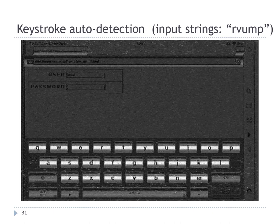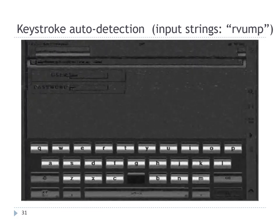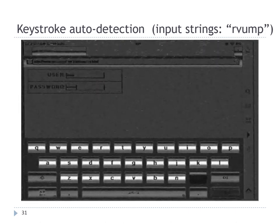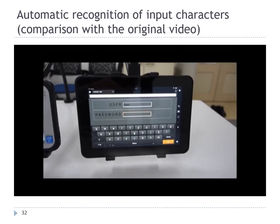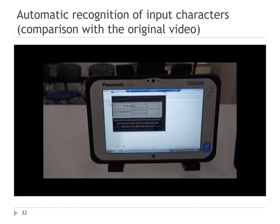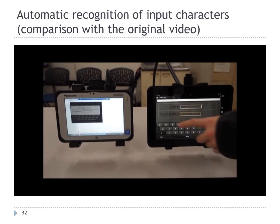We detected keystrokes from the difference among neighboring frames in the reconstructed image sequence. Here, I demonstrate keystroke detection. The input keystrokes are detected by image difference between neighboring frames. In this example, the input key string is R, V, U, and P. Like this, we can detect keystrokes automatically. The right side shows the original screen, and the left side shows the information acquired from the electromagnetic waves. In this way, input information can be obtained in real time from EM leakage.